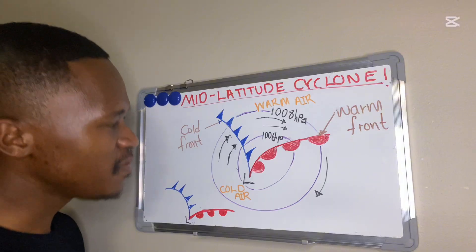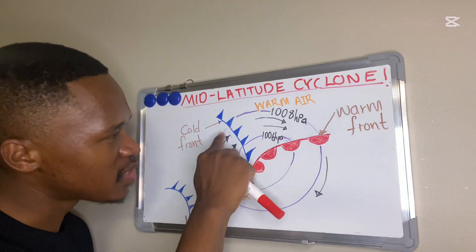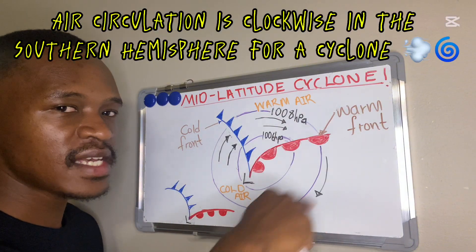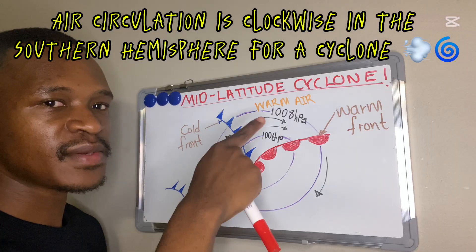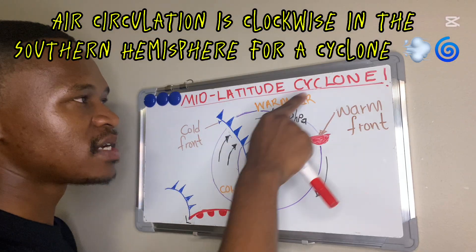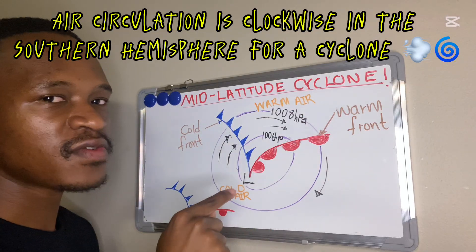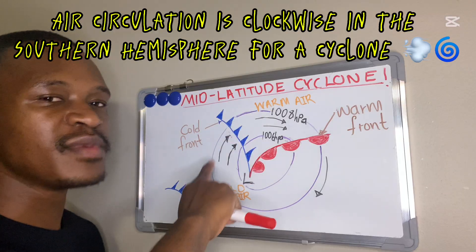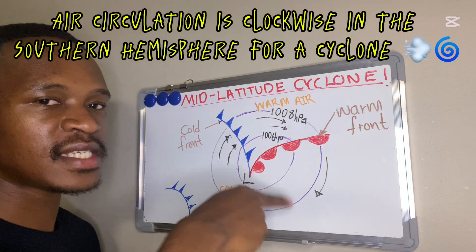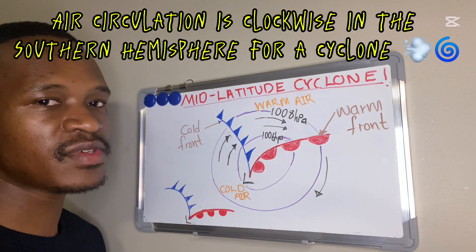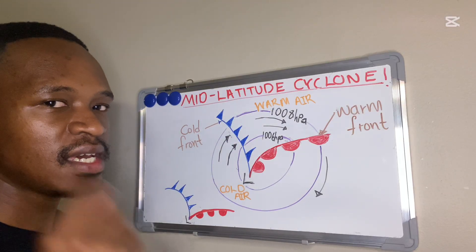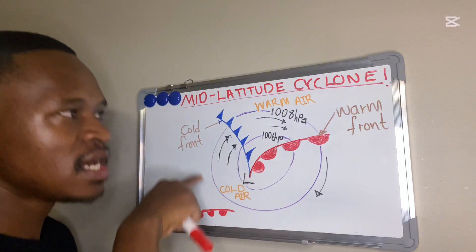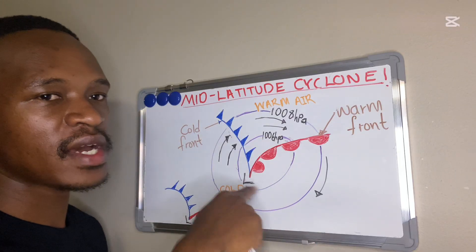If you look at these black arrows, they are depicting my air circulation. For a mid-latitude cyclone, the air circulation will be clockwise in the southern hemisphere.